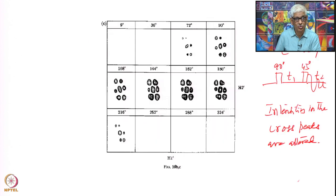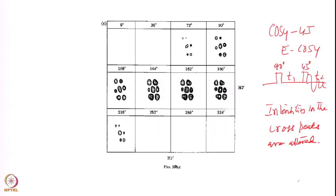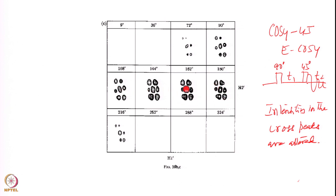Therefore you need to extract that information. You can see more components here because the cancellations are reduced — the intensities of the components are altered by the use of this 45-degree flip angle for this pulse. Now we can see many more components, therefore you can do a simulation which will allow you to extract the coupling constants. Once again you can go here and you do not see the cross peaks here as expected.